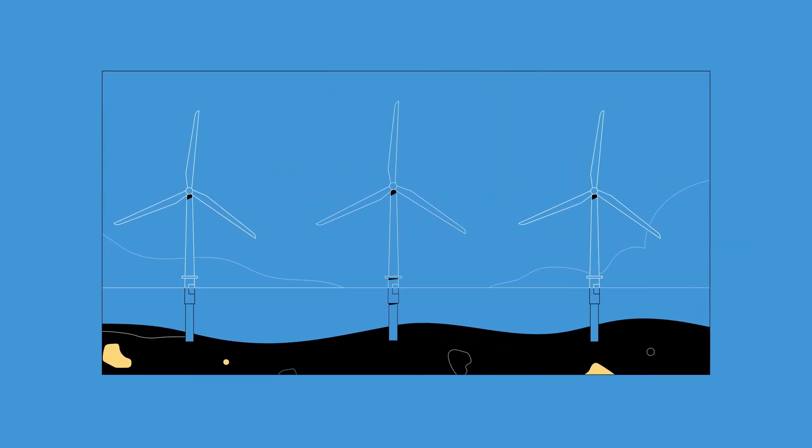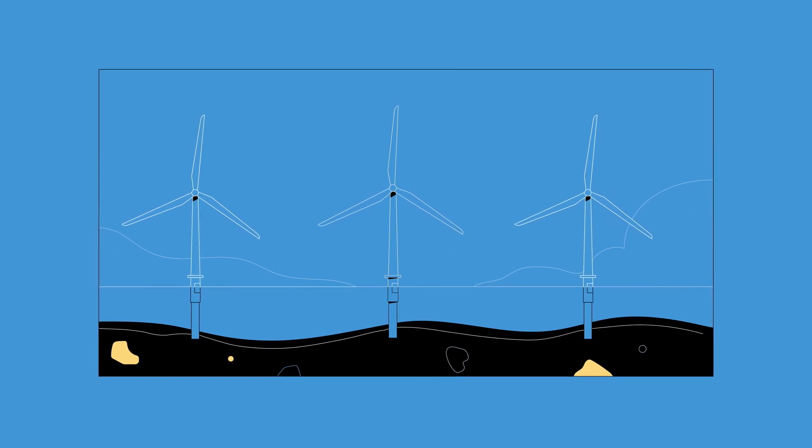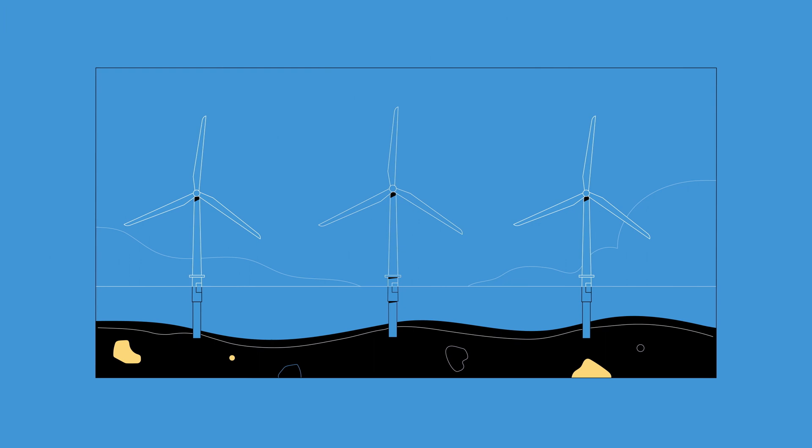the turbines connect to a grid of array cables that are safely buried beneath the seabed and lead to the offshore substation.